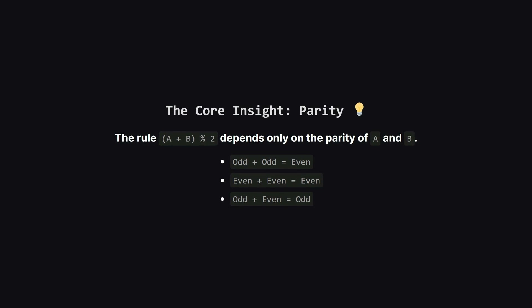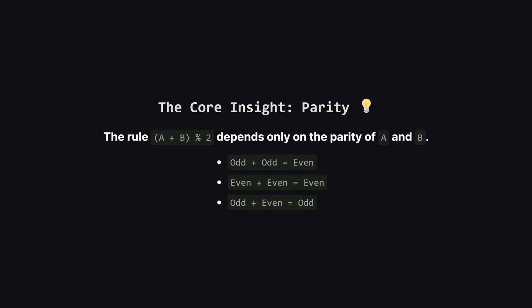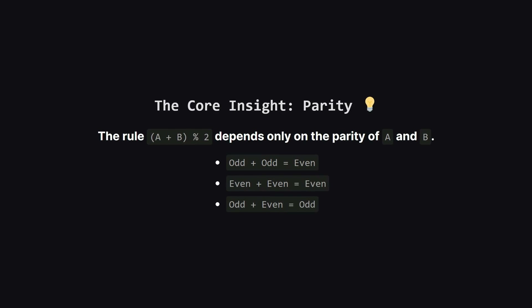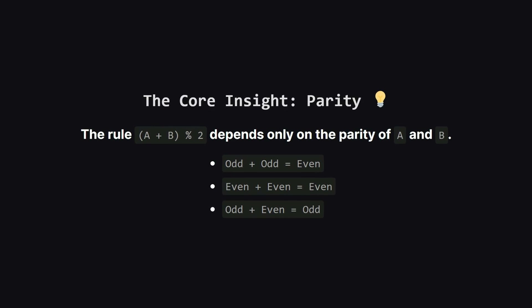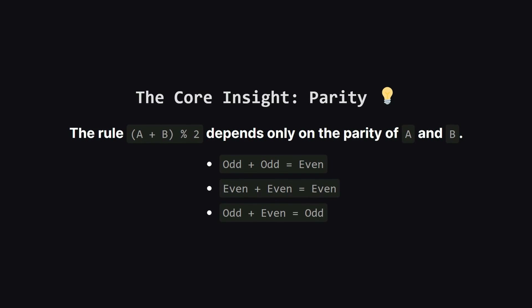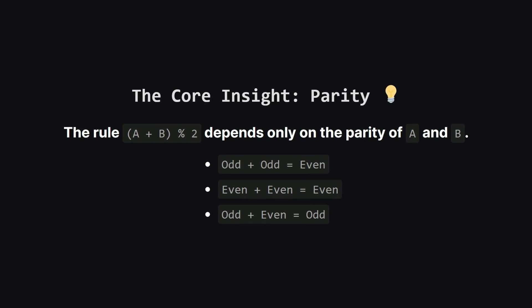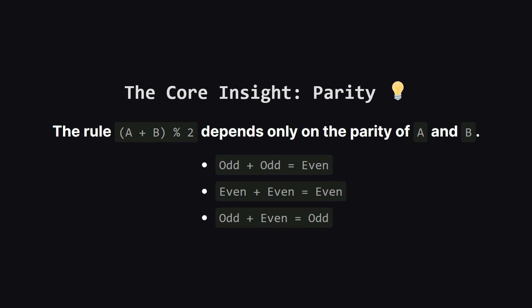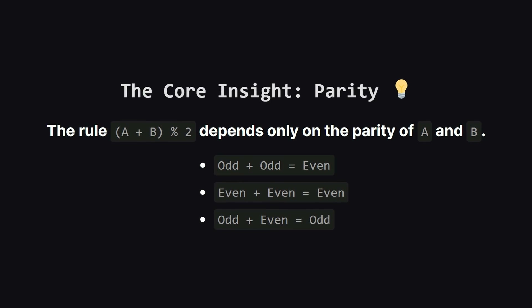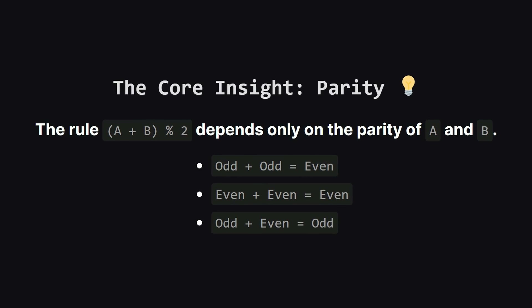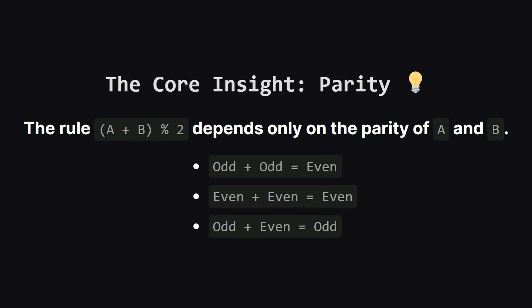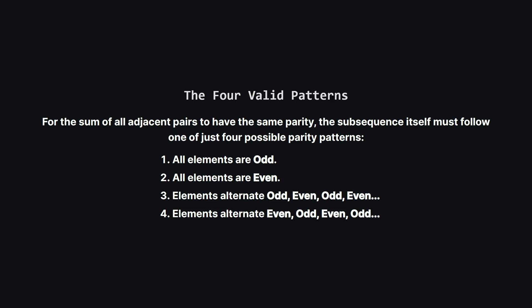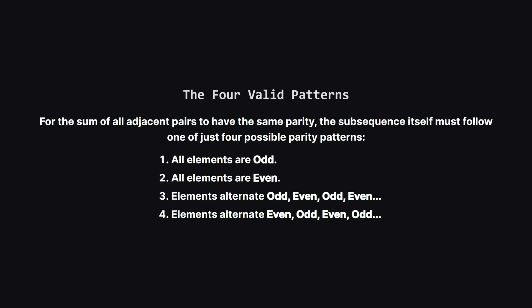So what's the trick here? It all comes down to parity — whether a number is even or odd. Think about adding two numbers: an odd plus an odd is always even, an even plus an even is also always even, but an odd plus an even will always be odd. This is the absolute key to the whole problem. This insight means that any valid subsequence must fit one of only four patterns.